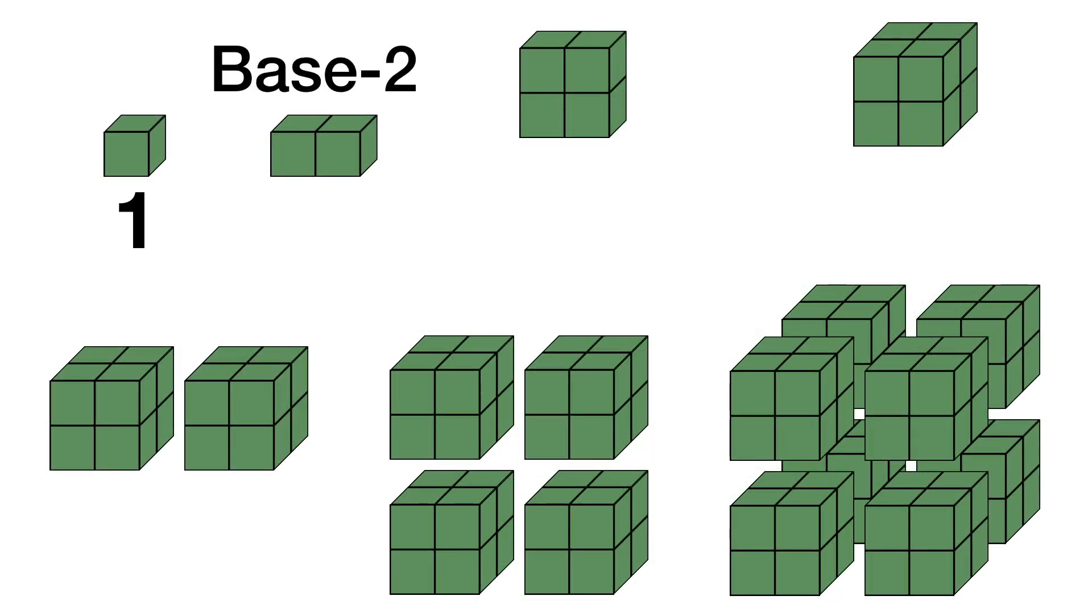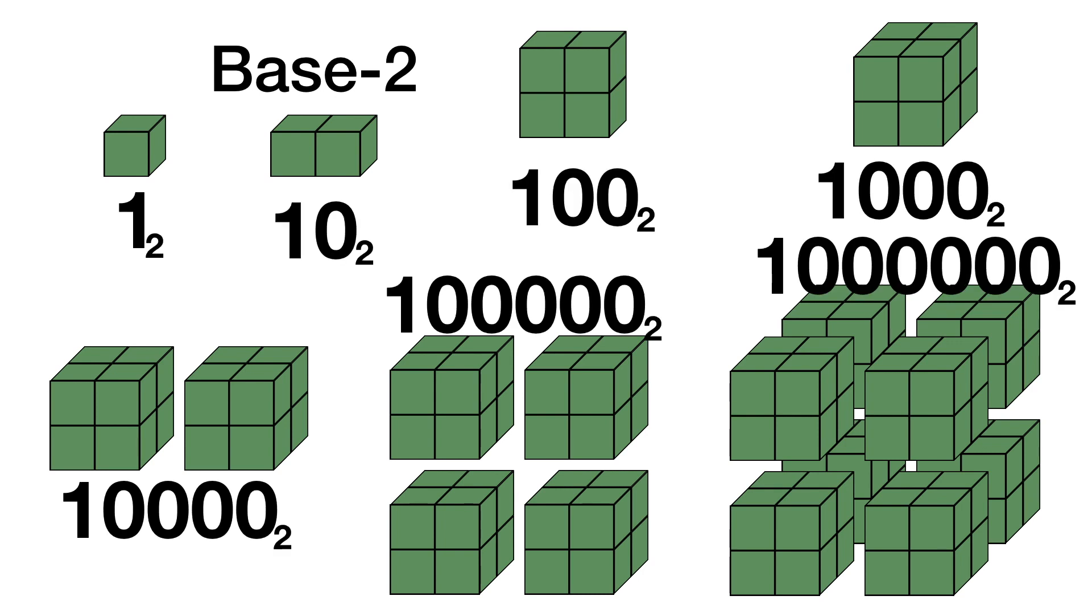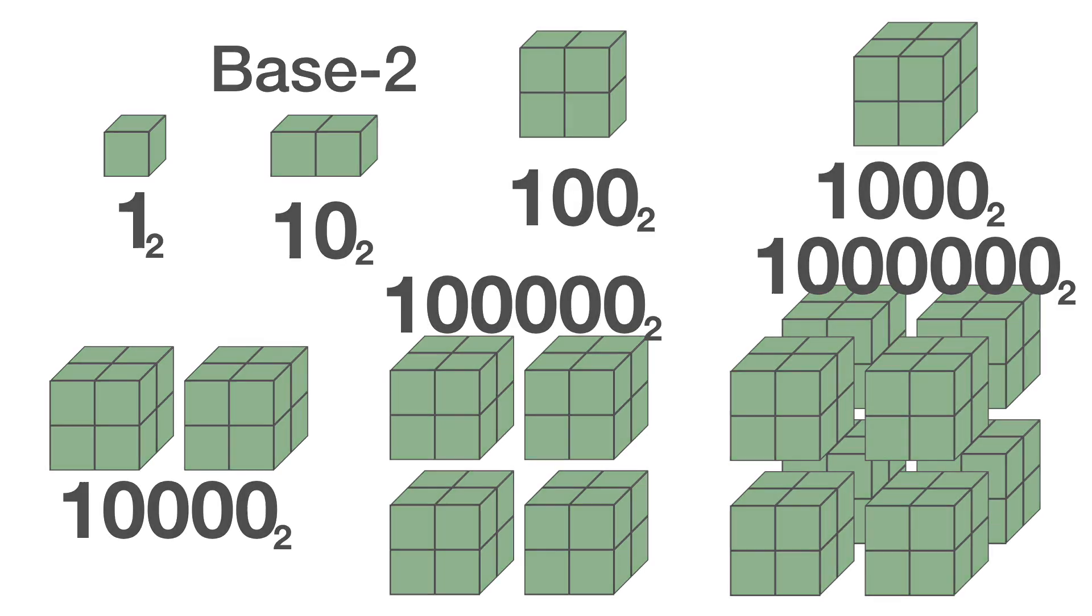Base 2 works just like base 10, except instead of counting by ones, tens, hundreds, thousands, we count by ones, twos, fours, eights, and so on—all the powers of 2. Each time we get to a new power of 2, we have to move out one digit. See, it's simple. Or maybe not so simple.